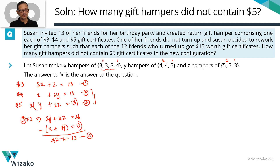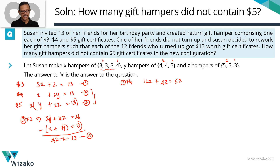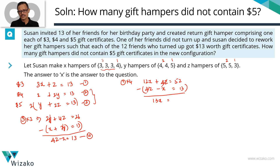Equation 4 has x and z; Equation 1 also has x and z. We want x, so let's eliminate z. The coefficient of z in Equation 1 is 1 and in Equation 4 is 4. Multiplying Equation 1 by 4: 12x plus 4z equals 52. Subtracting Equation 4 (4z minus x equals 13): 4z cancels, leaving 12x minus (minus x) equals 13x, and 52 minus 13 equals 39. So 13x equals 39, giving x equals 3. x is the number of gift hampers that do not contain a $5 certificate — the answer is 3.